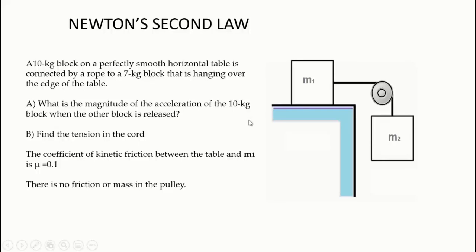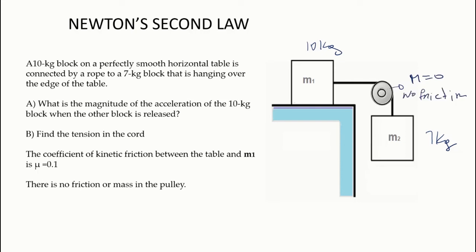In this example, we are going to use Newton's second law to solve the problem of acceleration. We have two objects, M1 and M2. M1 is 10 kilograms and M2 is 7 kilograms. These two objects are connected to each other through a pulley. The pulley is massless and there is no friction on the pulley. Between the table and the block, we have friction. The coefficient of kinetic friction mu is 0.1. The objective is to find the acceleration and the tension in the cord.